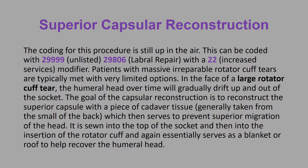Superior capsular reconstruction. This is something that has increased this year and is being coded more often by orthopedic surgeons. The coding of this procedure is still up in the air. This can be coded with 29999 unlisted, or 29806 labral repair with a 22 increased services modifier. Patients with massive irreparable rotator cuff tears are typically met with very limited options. In the face of a large rotator cuff tear, the humeral head over time will gradually drift up and out of the socket. The goal of a capsular reconstruction is to reconstruct the superior capsule with a piece of cadaver tissue, generally taken from the small of the back, which then serves to prevent superior migration of the head. It is sewn into the top of the socket and then into the insertion of the rotator cuff, and essentially serves as a blanket or roof to help recover the humeral head.